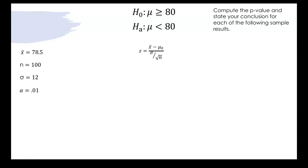So our z-score formula is x-bar which is 78.5 minus mu null which that will just be our 80 all over sigma which is 12 divided by the square root of n which is 100. So we can plug all of that into our z-score formula.